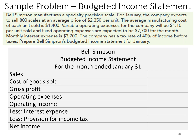Here's a problem that asks us to prepare a budgeted income statement. Bell Simpson manufactures a specialty precision scale. For January, the company expects to sell 800 scales at an average price of $2,350 per unit. The average manufacturing cost of each unit sold is $1,400. Variable operating expenses will be $1.10 per unit sold, fixed operating expenses are expected to be $7,700 per month, monthly interest expense is $3,700, and the company has a tax rate of 40%. Prepare Bell Simpson's budgeted income statement.